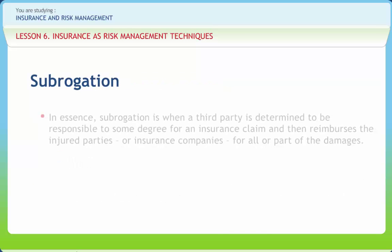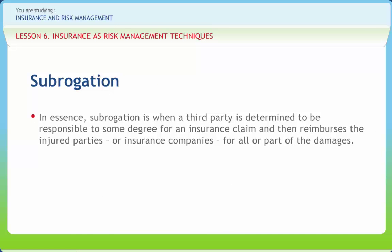In a sense, subrogation is when a third party is determined to be responsible to some degree for an insurance claim and then reimburses the injured parties or insurance companies for all or part of the damages. In many areas of insurance, the degree of specialization needed to pursue subrogation can vary by situation and circumstances. There are, of course, some cardinal rules that all can observe, including a deliberate and timely review of every claim for subrogation potential.